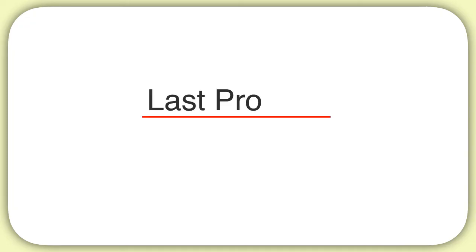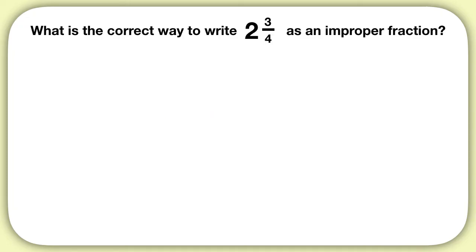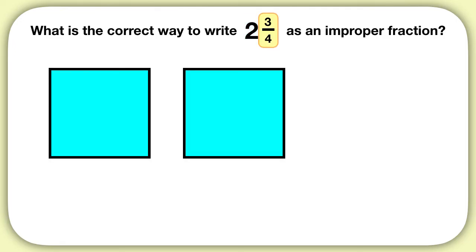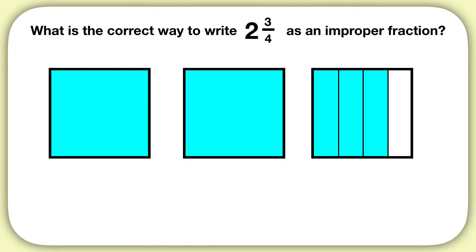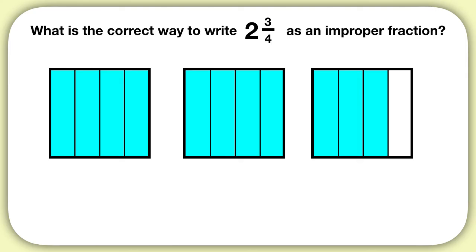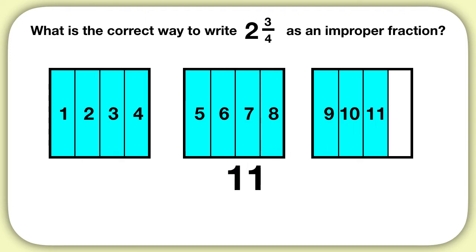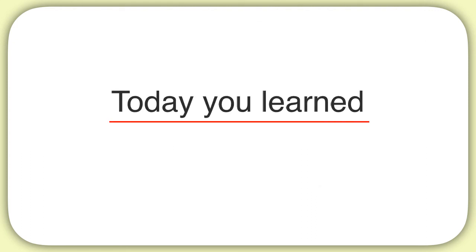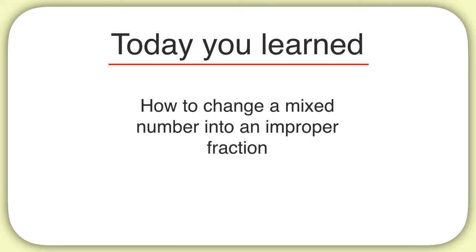Here's your last problem for today. What is the correct way to write 2 and 3 fourths as an improper fraction? Start by drawing your 2 wholes as 2 squares, and then 3 fourths more. Now break your wholes into pieces. We're working with fourths, so we'll break our wholes into fourths. Then we count up — we have 11 pieces. Our numerator is 11, and we're working with fourths, so our denominator will be 4. 2 and 3 fourths can be rewritten as 11 fourths. Today you learned how to change a mixed number into an improper fraction.